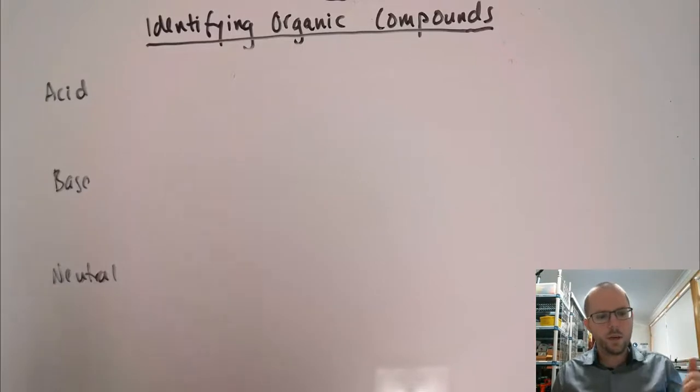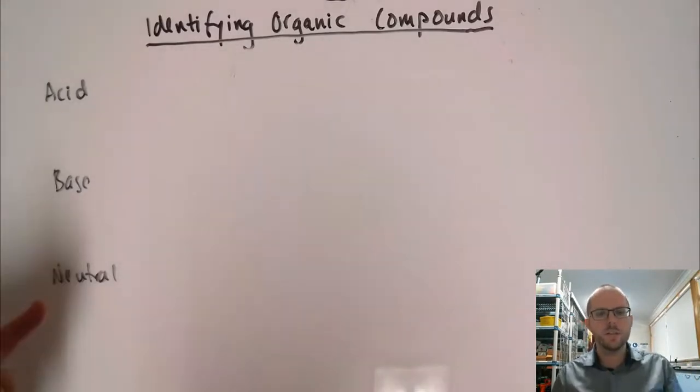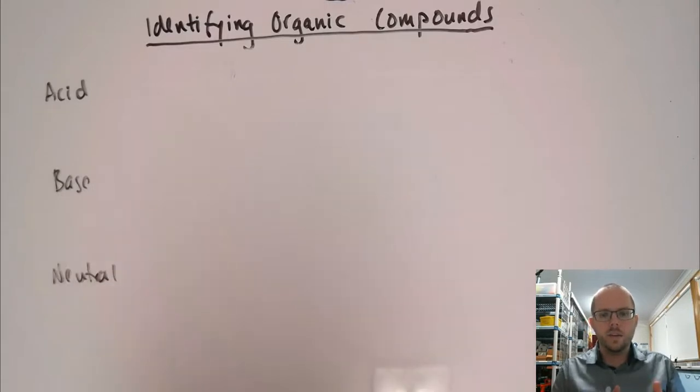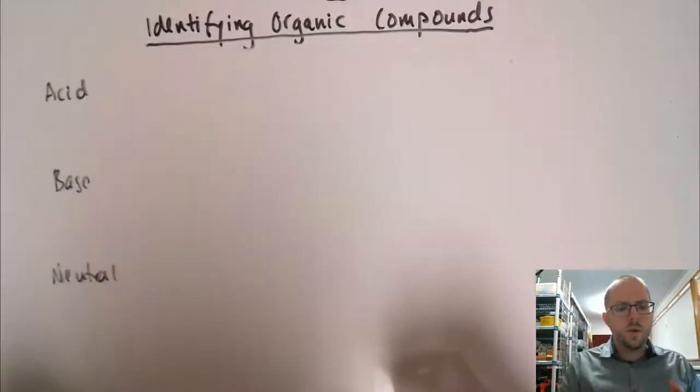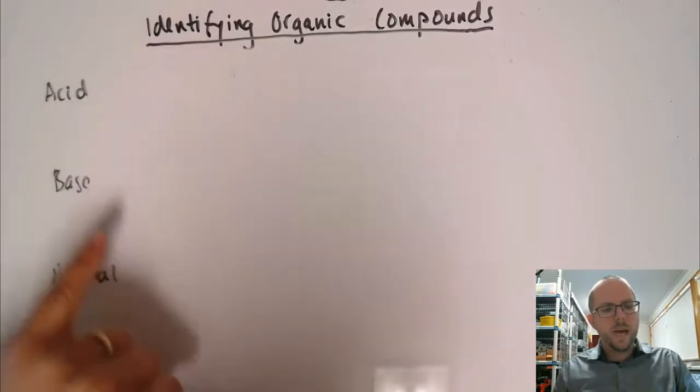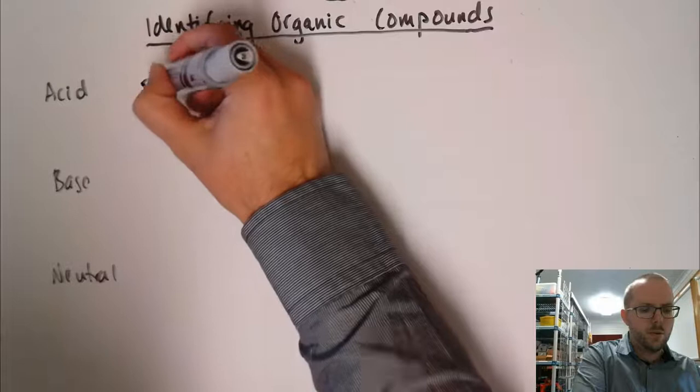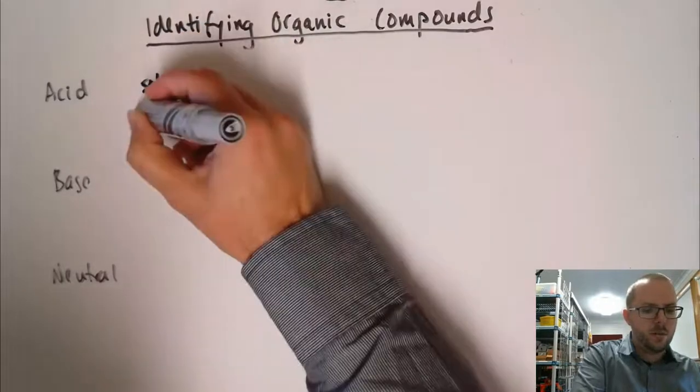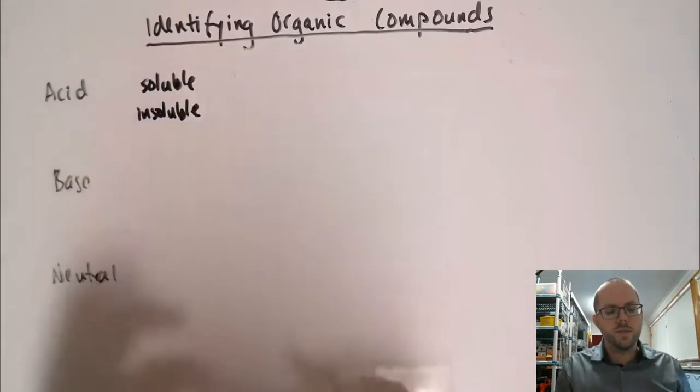Just to finish things off in this video, we're now going to look at distinguishing between acids, bases, and neutral substances. We have organic acids and bases as well as others that are neutral. We need to be able to distinguish them as well. For an acid and a base, it depends on whether it's soluble or not. If it's soluble or insoluble, then that kind of alters what we can do.